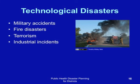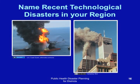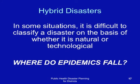Hybrid disasters: in some situations, it is difficult to classify a disaster on the basis of whether it is natural or technological. For instance, where do epidemics fall?